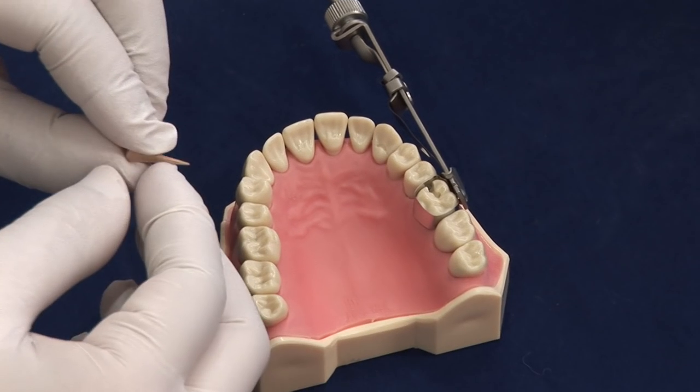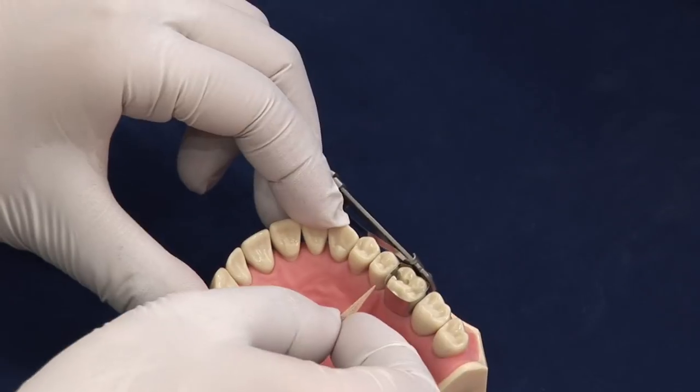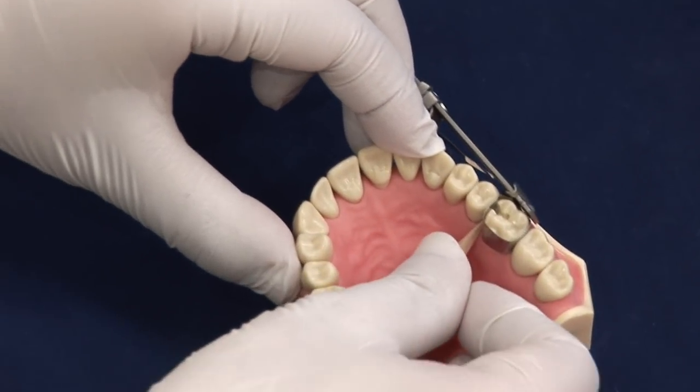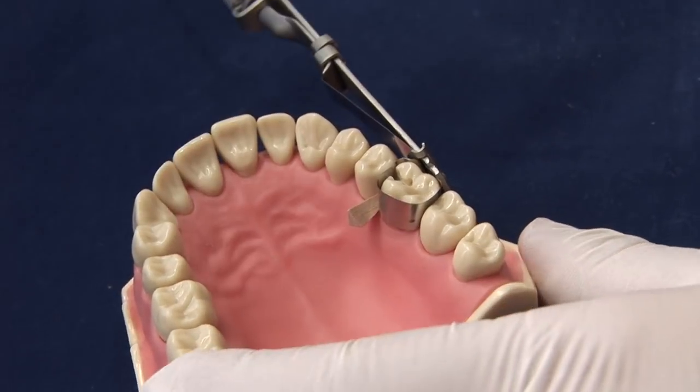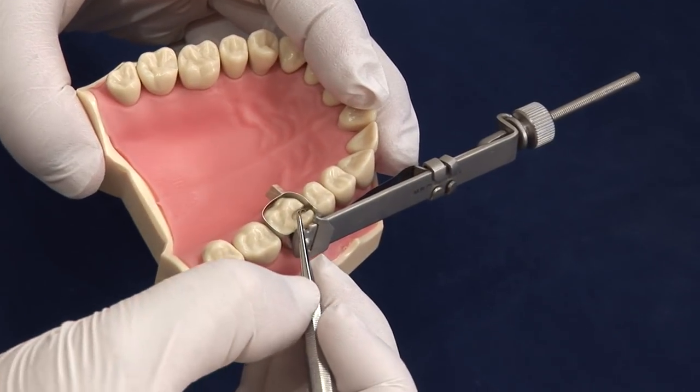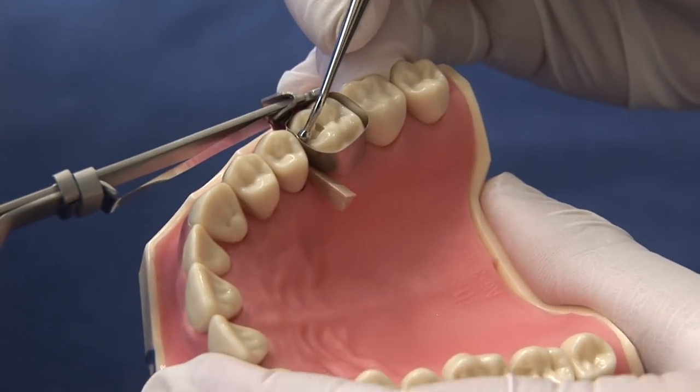To hold the matrix band in place, insert a wooden wedge in between the tooth. Push in place with the back of a pair of tweezers. To adapt the matrix band to the neighbouring tooth, use a ball burnisher.